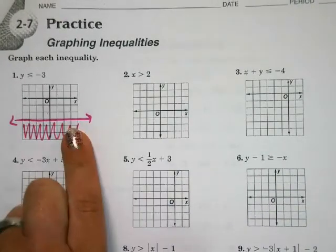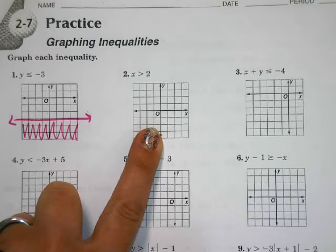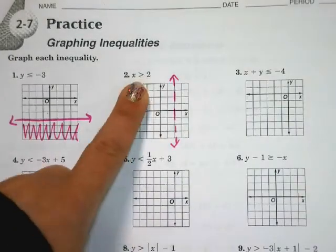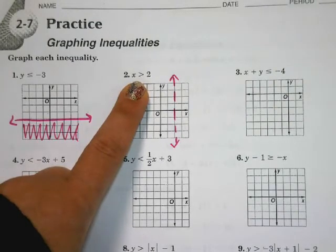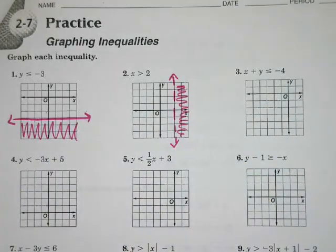Number two: if y equals a number are horizontal lines, then x equals a number are vertical lines. Do I have a solid or dashed line at positive 2? Dashed. And now I want things that are bigger than 2 — to the left or to the right? To the right, we want things that are bigger than 2. For the rest of them, number three — if you graph it with intercepts, that's perfectly fine, just be careful how you shade. You can only use the above-and-below trick if it's in y equals mx plus b form.